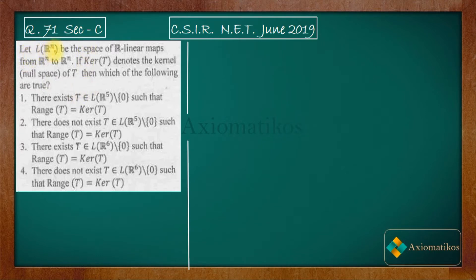Let L(Rⁿ) be the space of R-linear maps from Rⁿ to Rⁿ. If kernel of T denotes the null space of T, then which of the following are true? L(Rⁿ) actually represents the space of all linear maps from Rⁿ to Rⁿ. Now let us try to see these options.